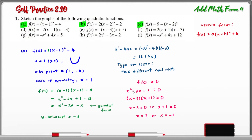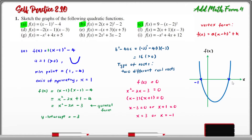With all this information, we can now sketch the graph for question A. The roots are at x = -1 and x = 3. The minimum point has coordinates (1, -4). The axis of symmetry is x = 1, and the y-intercept is -3.